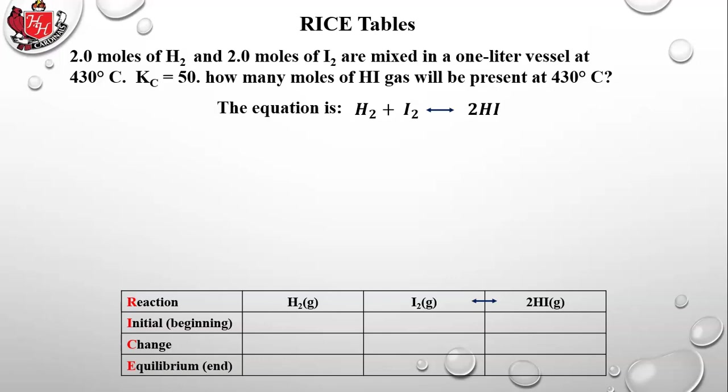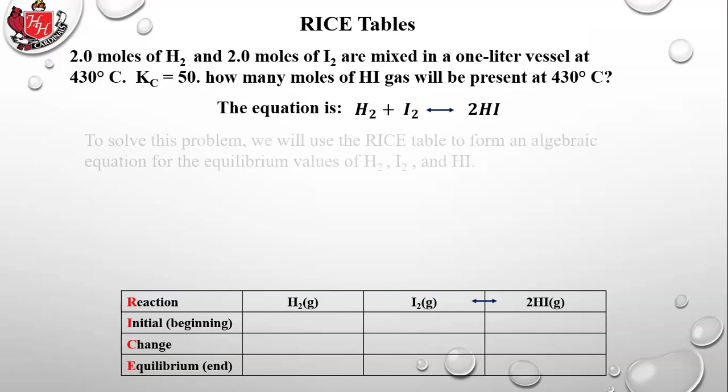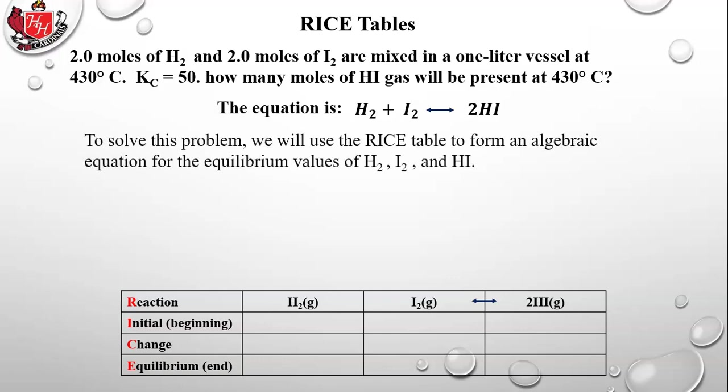We're going to say that the equilibrium constant is 50. So how many moles of HI gas will be present at 430 degrees Celsius? The equation is: one mole of H2 plus one mole of I2 produces two moles of HI. The double arrow means the reaction can go in both directions — that's an equilibrium situation.